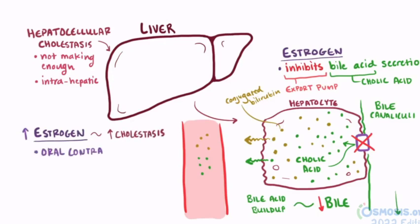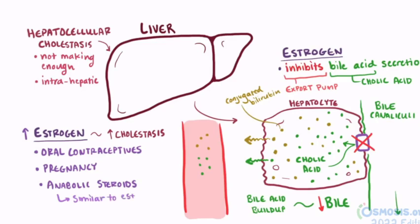Oral contraceptive pills, or birth control pills, use estrogen and progesterone to stop ovulation, so it makes sense that they've been linked to developing cholestasis. Similarly, during pregnancy, estrogen levels can increase a lot, which can lead to pregnancy-induced cholestasis, though this typically isn't dangerous to the fetus or the mother. Anabolic steroids, like those used by athletes or bodybuilders, have also been linked to cholestasis, thought to be because they're similar in structure to estrogen, but the mechanisms aren't very well known.